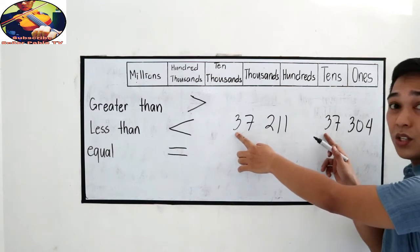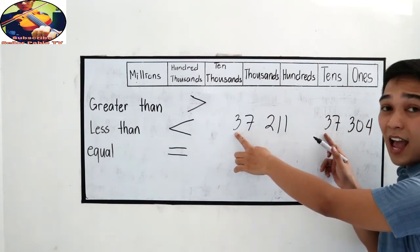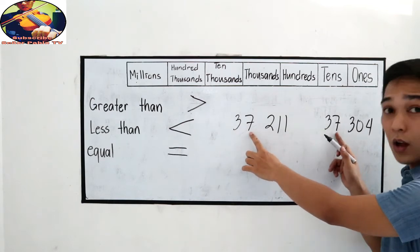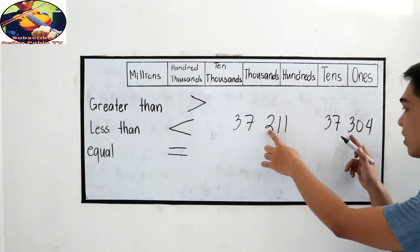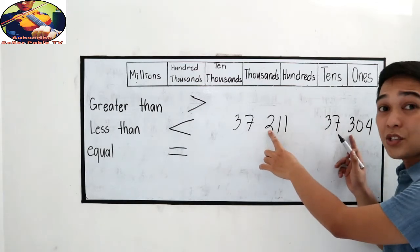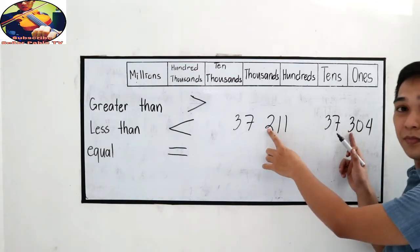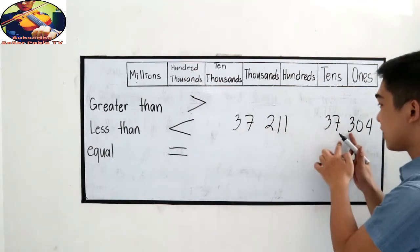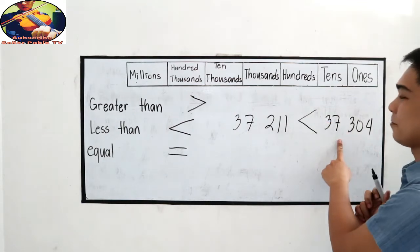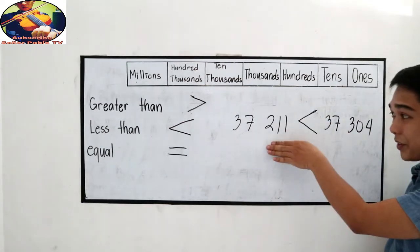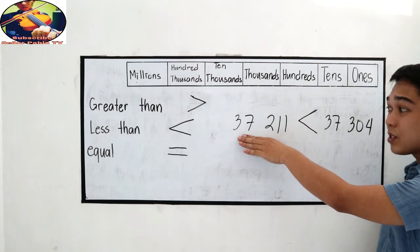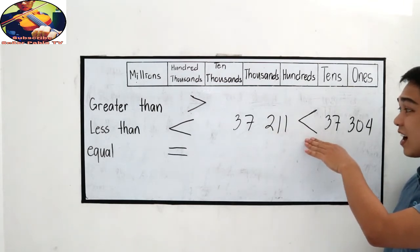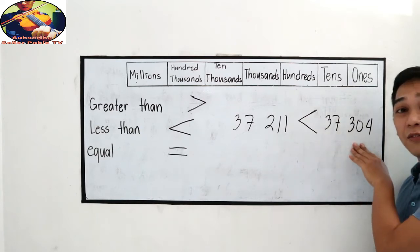If they are equal, proceed to the next highest number or digit. 7 and 7 is also equal. Now 2 and 3, which is greater? Of course 3 is greater, so we need to use this sign. Now let us read: 37,211 is less than 37,304.